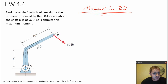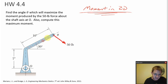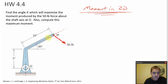So this problem says: find the angle theta — that's the angle that this 50-pound force vector makes with the line directed along that beam. Find that angle theta which will maximize the moment produced by the 50-pound force about the shaft axis at O.